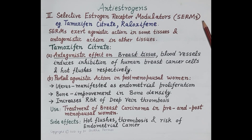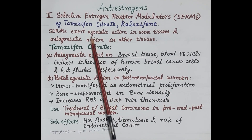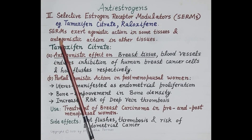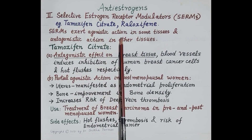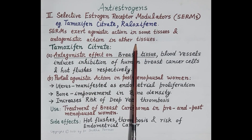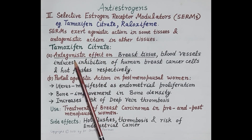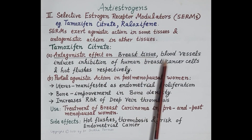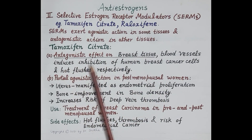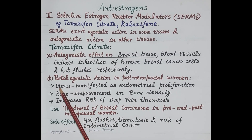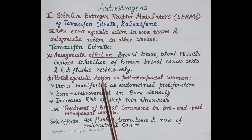Now let's talk about selective estrogen receptor modulators — tamoxifen citrate and raloxifen. It is very important to remember that SERMs exert agonistic action in some tissues and antagonistic action in others. Tamoxifen exerts antagonistic effect on breast tissue and blood vessels, thereby inducing inhibition of human breast cancer cells and causing hot flushes.